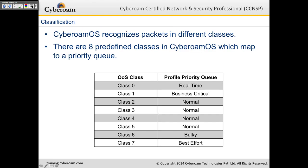CyberROM OS recognizes packets in different classes. There are eight predefined classes in CyberROM OS which map to a priority queue. Class 0 is real-time and offers the highest priority of traffic. Class 1 is a bit lower priority than class 0, which you can apply for business critical applications. Classes 2, 3, 4, 5 follow, and class 6 is for bulky traffic which is of lower priority. Class 7 is the least priority traffic, which is for best effort.